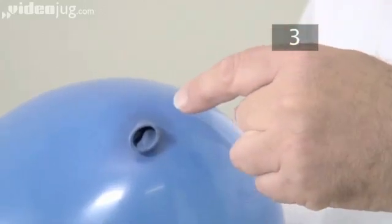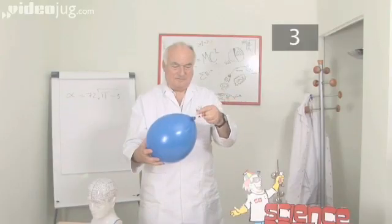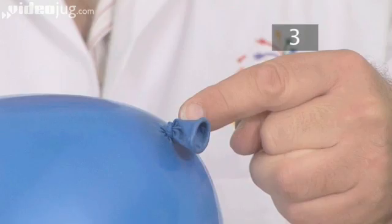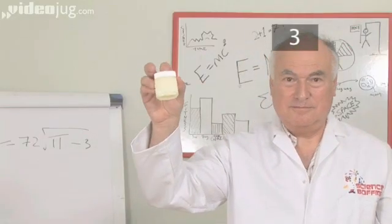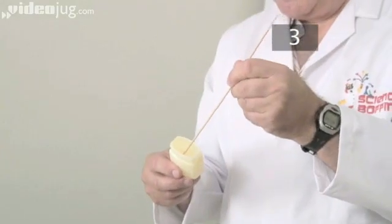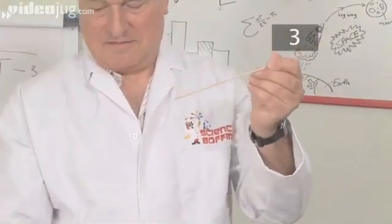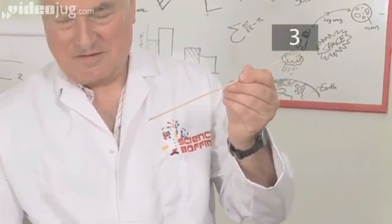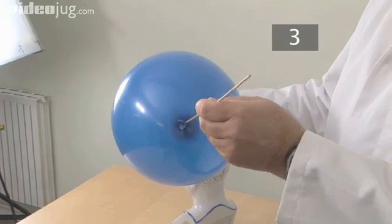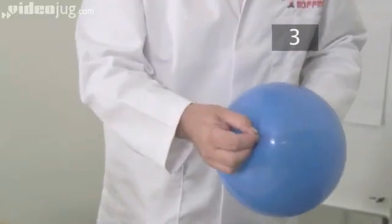You have to pierce the balloon on the top at the spot where the color is darkest. This is where it is less stretched. Put some petroleum jelly on the end of the needle before you push it through. This reduces friction when the needle pierces the balloon surface. Push the skewer through the top of the balloon first, then out of the neck.